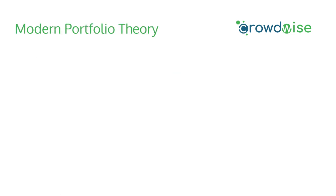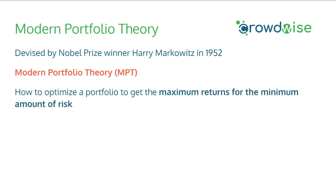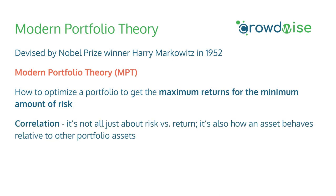Modern Portfolio Theory was devised by Nobel Prize winner Harry Markowitz in 1952. Basically, what Modern Portfolio Theory is is that it gives a way to optimize a portfolio to get the maximum returns for the minimum amount of risk. It also stresses the importance of correlation — it's not all just about risk versus return trade-offs, but also about how an asset behaves relative to other assets that you hold in your portfolio.